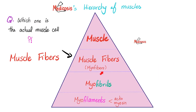Each muscle is made of muscle fibers. Each fiber is made of myofibrils. Each fibril is made of myofilaments such as actin and myosin. Which one is the muscle cell? The muscle fiber is the actual cell, and it obeys the all-or-none law. It was the same story with the nerve — the nerve fiber, the neuron, the cell obeys the all-or-none law.